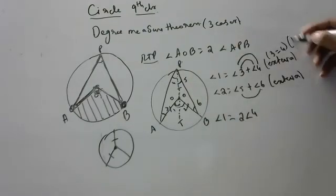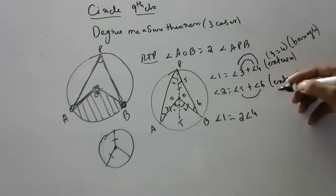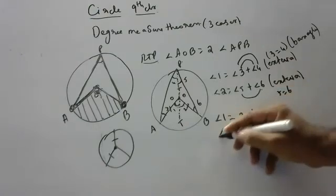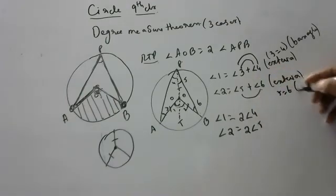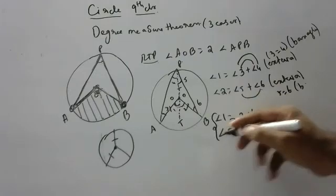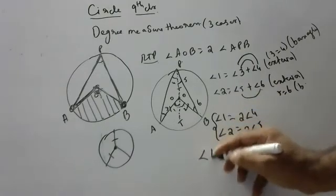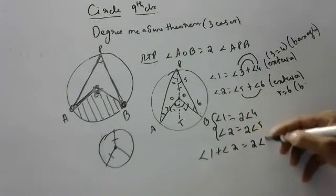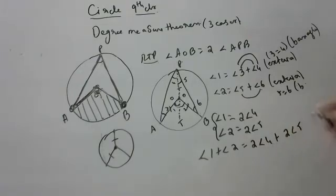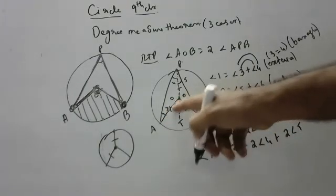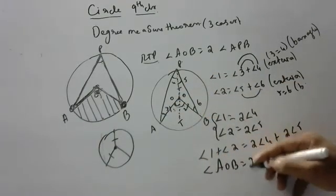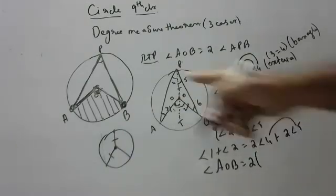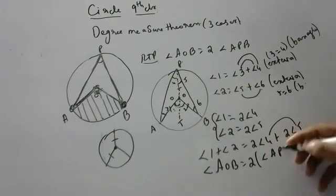Why are angles 3 and 4 equal? Base angles — because it is an isosceles triangle with equal radii. Similarly, angles 5 and 6 are equal. So angle 1 can be written as 2 times of angle 4, and angle 2 as 2 times of angle 5. Adding both: angle 1 plus angle 2 equals 2 times of angle 4 plus angle 5. Angle 1 plus 2 is angle AOV, and angle 4 plus 5 is angle APV. Hence proved.